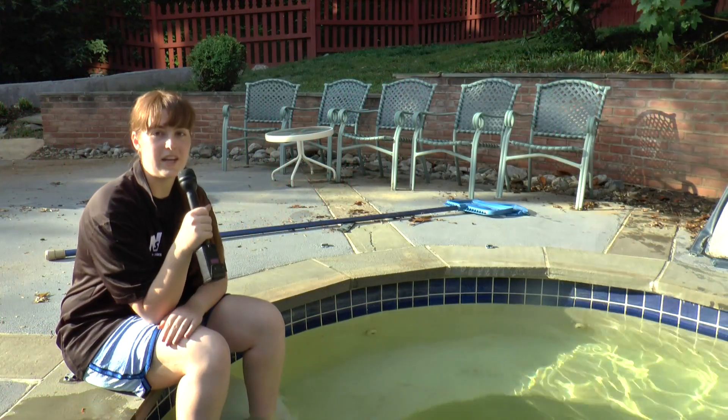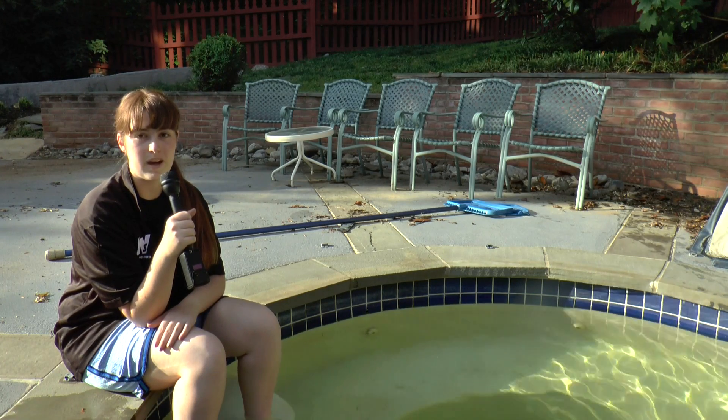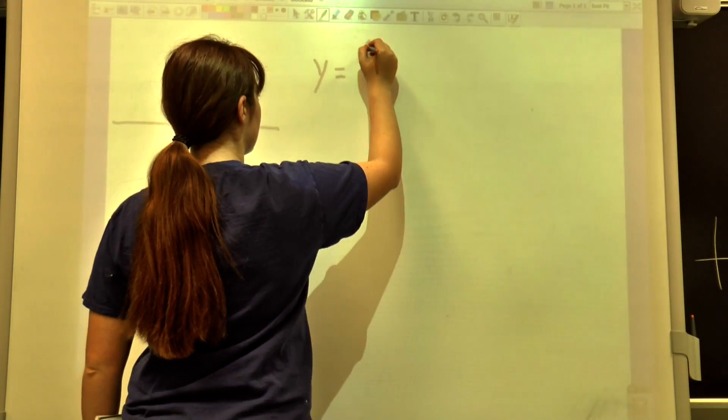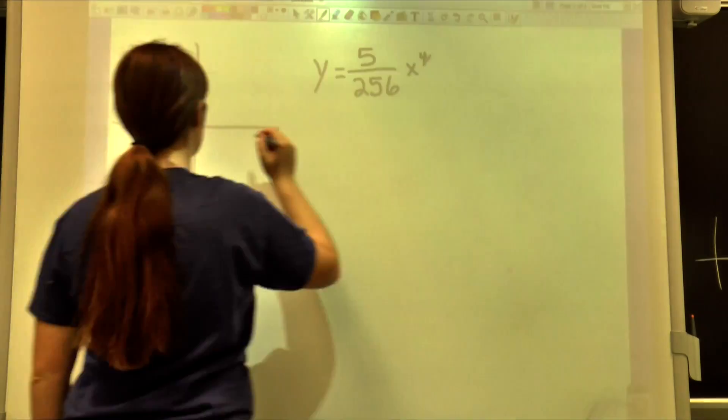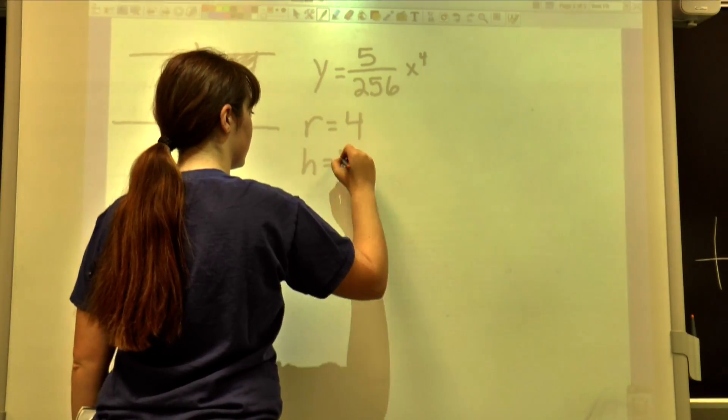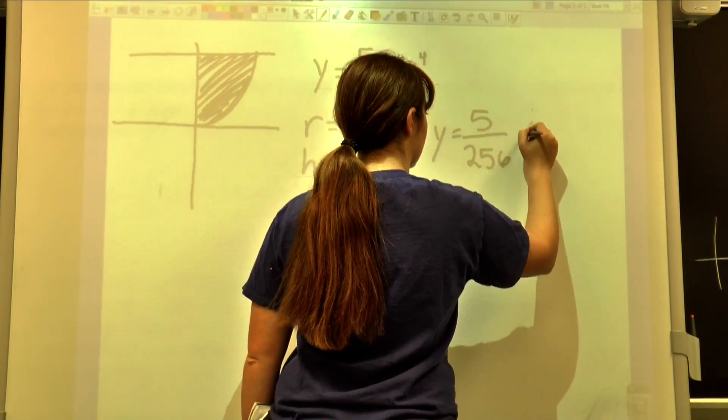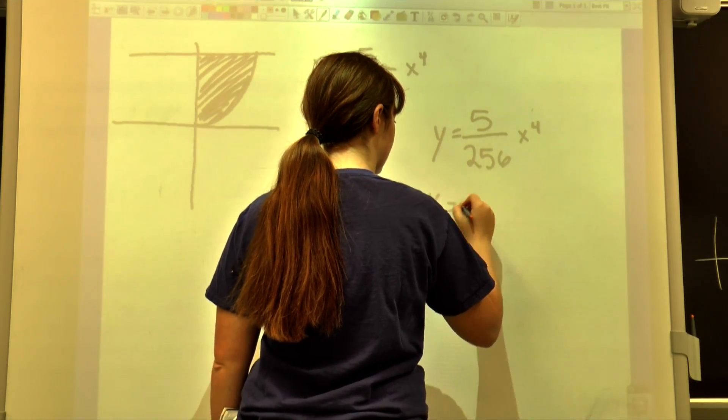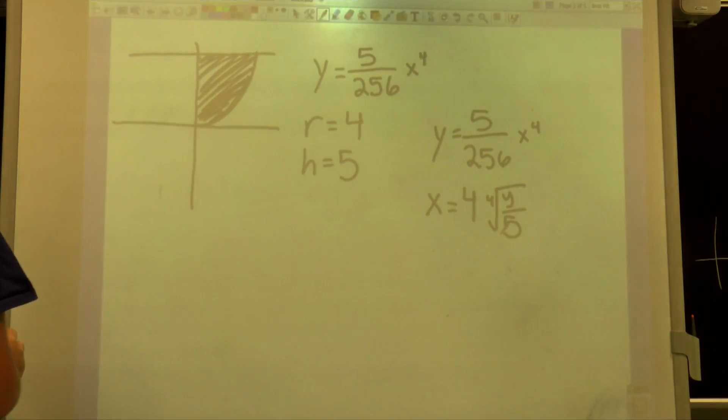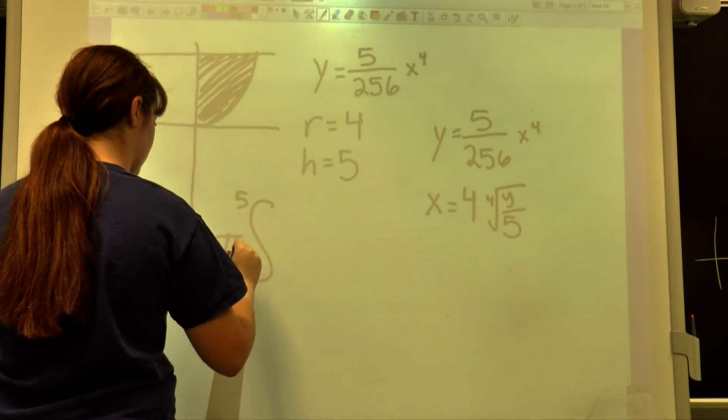This pool here is 5 feet deep and 8 feet across. It can be represented by the function y equals 5x to the 4th over 256. So first I'm going to sketch out the graph and write all of the given information. We are going to revolve the first quadrant of this graph about the y axis. Because we are revolving it around the y axis, we need to rewrite our function in terms of y. Our limits of integration also need to be in terms of y, so we are going to use 0 to 5, the height.